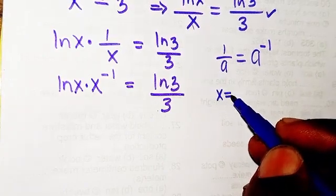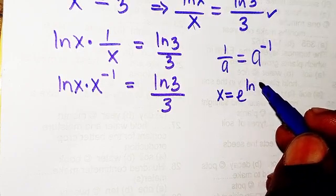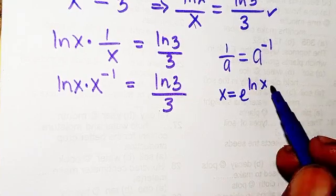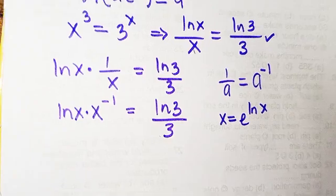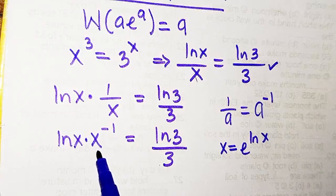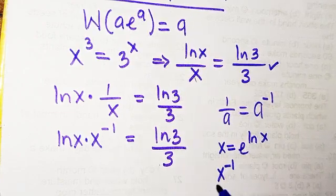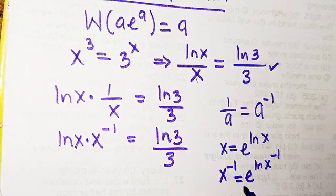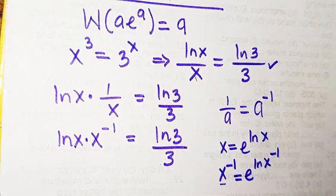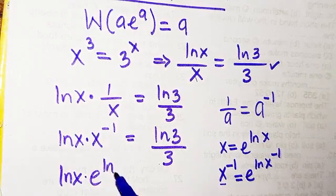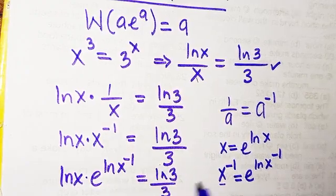We recall that x can be written as e^(ln x), since e and ln are inverses of each other. Because the Lambert W function involves e, we want to introduce e. So we replace x^(-1) with e^(ln x) raised to the power minus 1, giving ln(x)·e^(ln(x)·(−1)) = ln(3)/3.